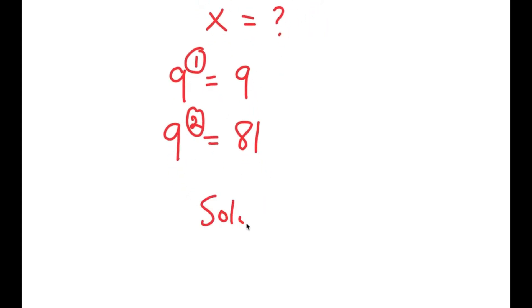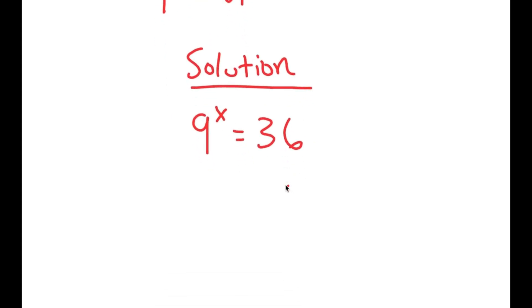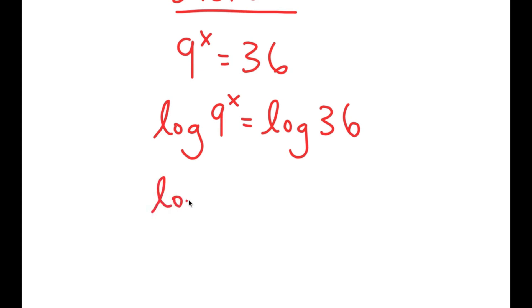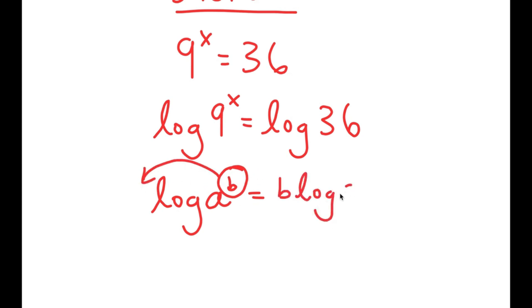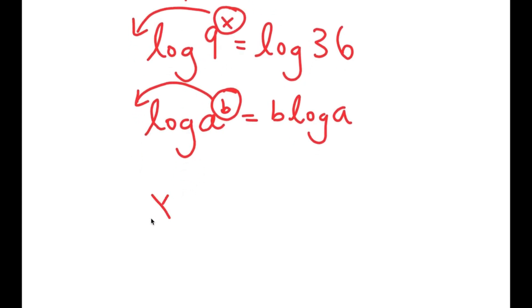We want to find the exact value of x. To do that, I'm first going to take the log on both sides, giving log of 9 to the power of x equals log 36. The reason I used logarithms is because of the property that log a to the power of b equals b times log a — so x, which was an exponent, can be moved to the front. This gives x times log 9 equals log 36.